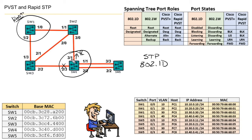Once we re-enable spanning tree on switch five for VLAN 10 — 'spanning tree VLAN 10' — gig 2 slash 2 is no longer a backup port because switch five is now blocking on one of those ports, preventing switch four from seeing its own BPDUs reflected back. So the backup port condition disappears once spanning tree is running again on the downstream switch.